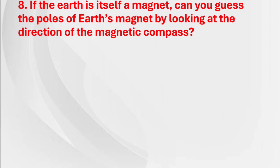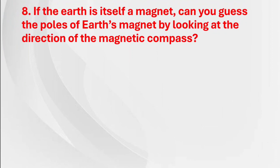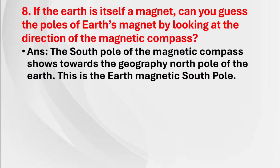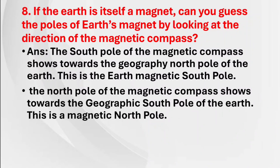Eighth question: If the earth is itself a magnet, can you guess the poles of the earth's magnet by looking at the direction of a magnetic compass? Answer: The south pole of the magnetic compass points towards the geographic north pole of the earth — this is the earth's magnetic south pole. The north pole of the magnetic compass points towards the geographic south pole of the earth — and this is the magnetic north pole.